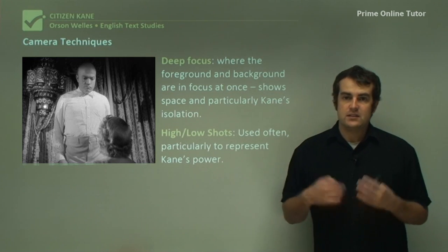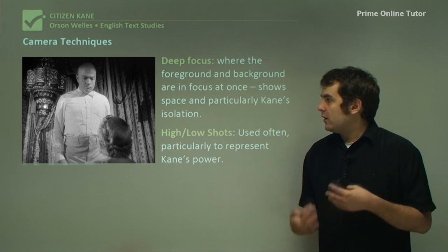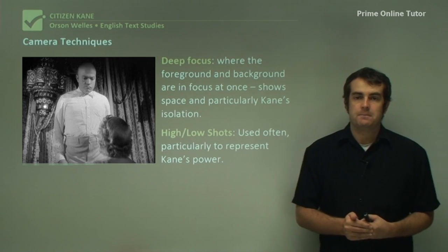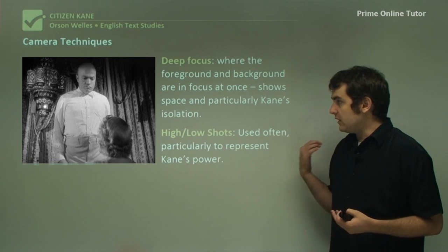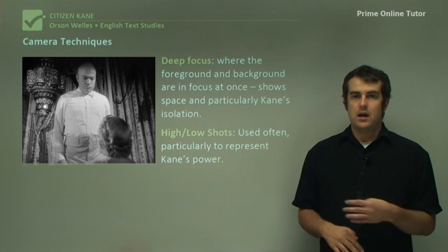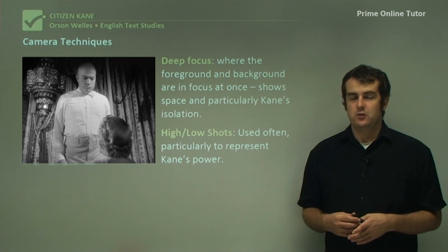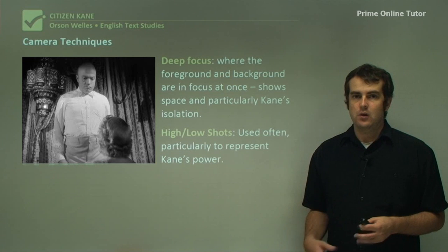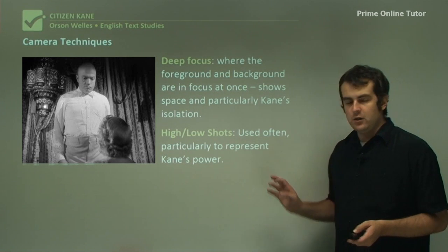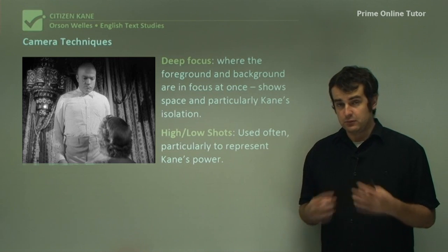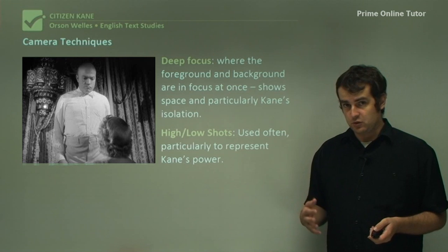High and low shots are used quite often, as this is a film about power — Kane's power in particular. As you can see in the shot on my right, you get a lot of shots which indicate power, not only the power of Kane but also of other people in the film and the way they try to exert themselves over others. High and low shots are quite common in the film and ones you'll come across a lot.